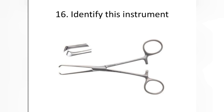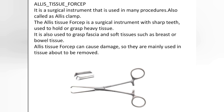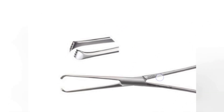You should know the name and function of this toothed instrument. It is named the Allis Tissue Forceps, also called the Allis clamp. It is a surgical instrument with sharp teeth used to hold or grasp heavy tissue. It is also used to grasp fascia and soft tissues such as breast or bowel tissue. Because Allis Tissue Forceps can cause tissue damage, they are mainly used on tissue that is about to be removed.